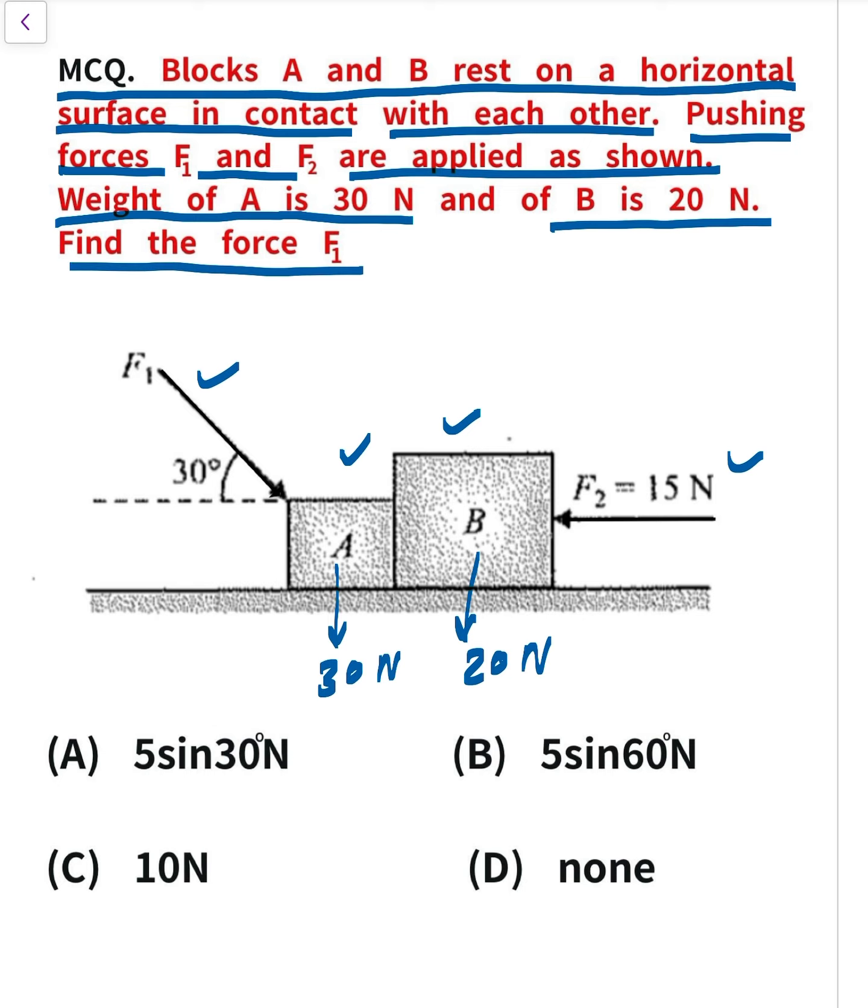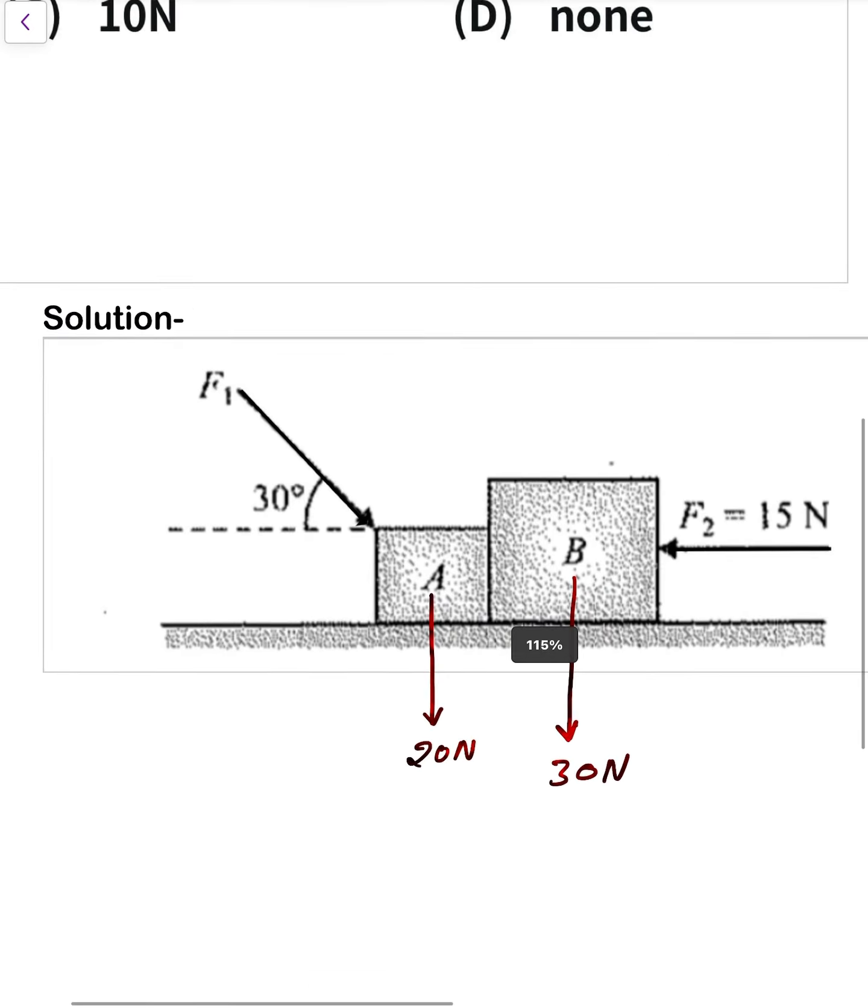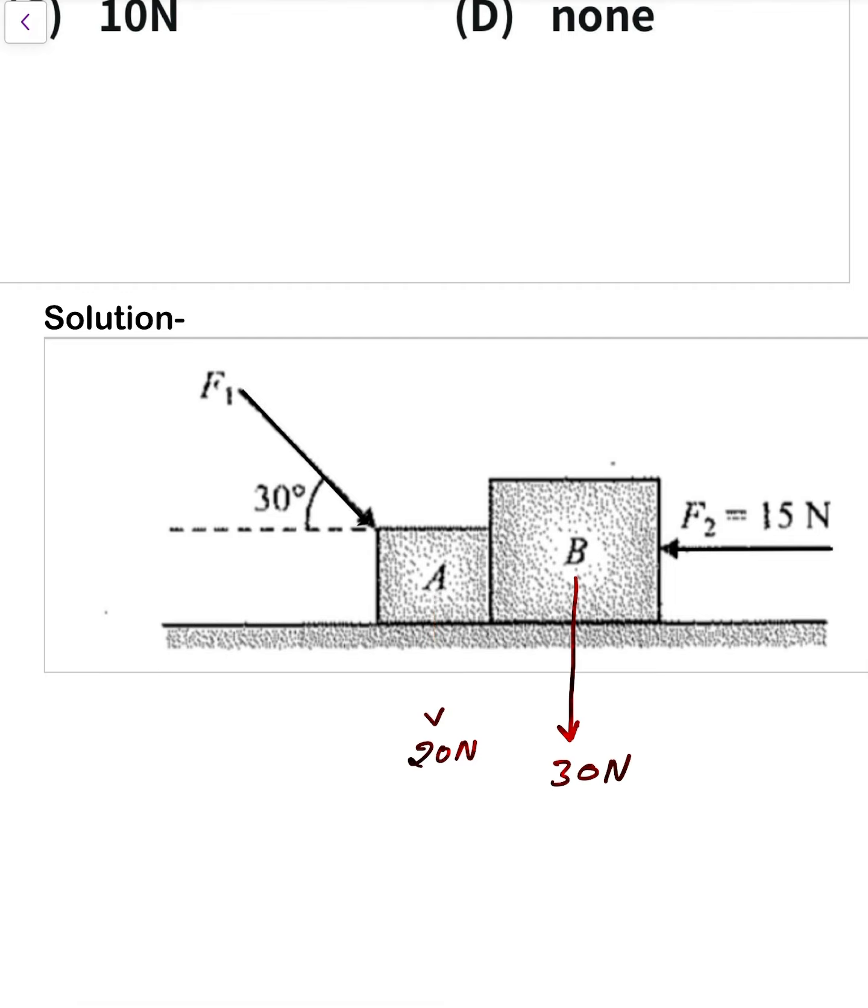So how can it be determined? First of all, make free body diagram of that block. First one, that block weight always works downward, 30 Newton and that one is 20 Newton.